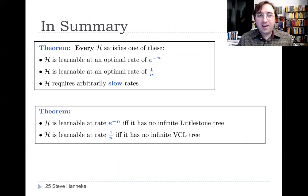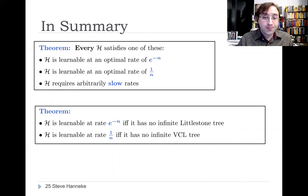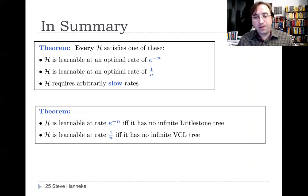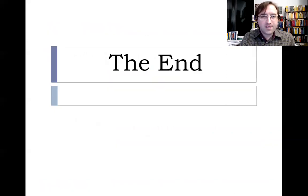To summarize, we've established a fundamental trichotomy of universal convergence rates. For every concept class, it can be learnable at an optimal rate that is exponential, at an optimal rate that is linear, or can require arbitrarily slow rates — and these are the only options. We also characterized precisely which classes are in which category: a class is learnable at an exponential rate if and only if it has no infinite Littlestone tree, and a class is learnable at a linear rate if and only if it has no infinite VCL tree. Thanks.